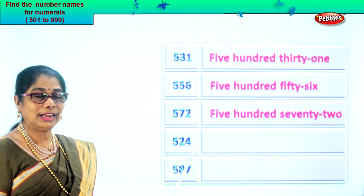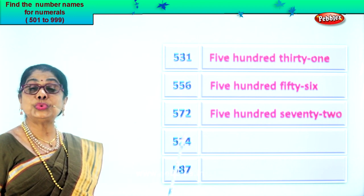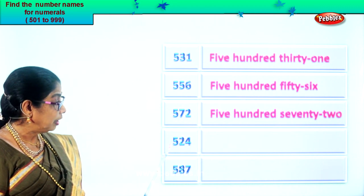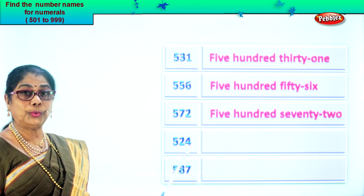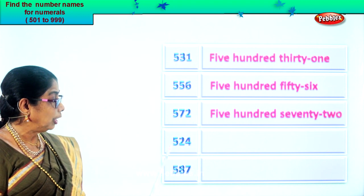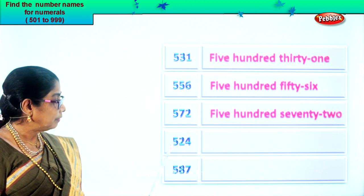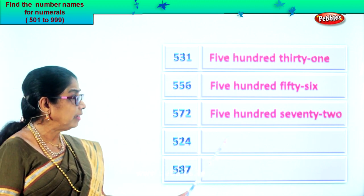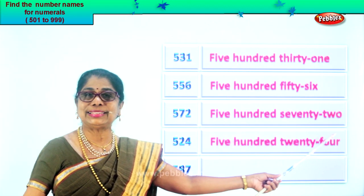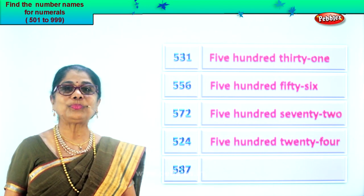Let's take the next numeral. We have five, two and four. Four in the ones place, two in the tens place and five in the hundreds place. So read now: five hundred twenty-four. So first we write five hundred, then we write twenty-four. We need to know the spelling of twenty-four and hundred. That's all. Five hundred twenty-four. Lovely.